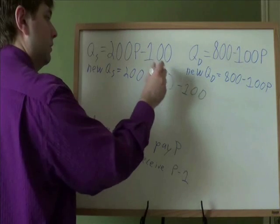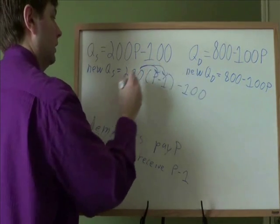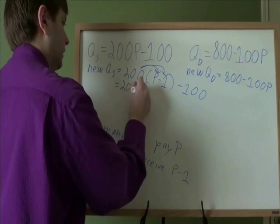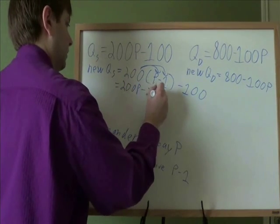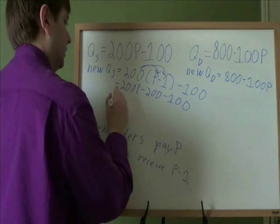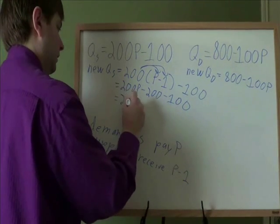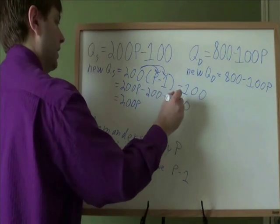Anytime you've got something in parentheses like that, you can distribute whatever's outside of it next to it. That gives us 200P minus 200 minus 100, and then we can combine like terms.